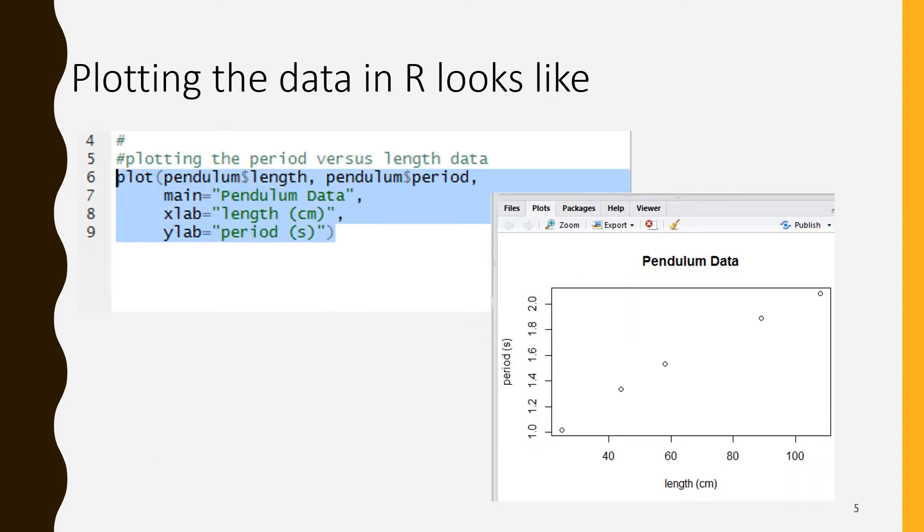Here we are using the plot method in R. We have plot open parenthesis, then we have the x values pendulum dollar sign length, comma, pendulum dollar sign period the y values. Another comma and then three more arguments: main gives us the title at the top, xlab gives us the x label and ylab gives us the y axis label. Remember there's an alternative notation where we would say pendulum dollar sign period tilde pendulum dollar sign length. If you're using the comma it's x comma y. If you're using the tilde it'll be y tilde x. You can see the result there, the period versus length data.